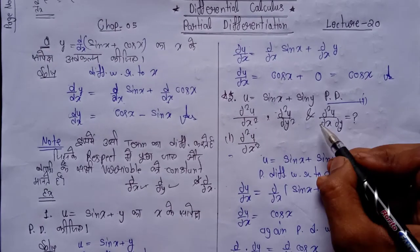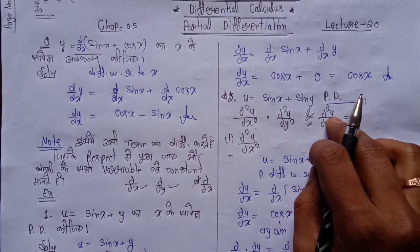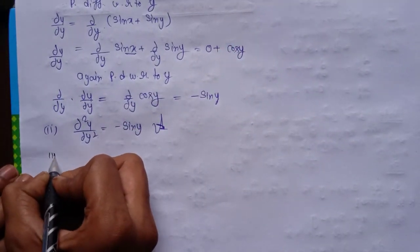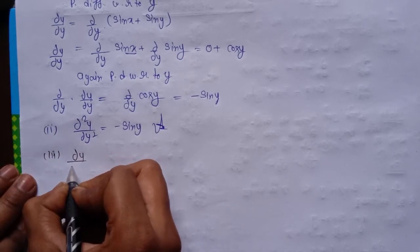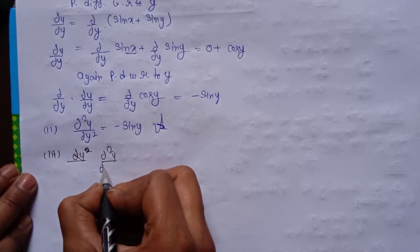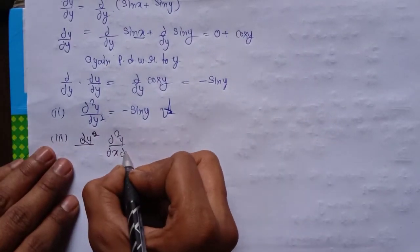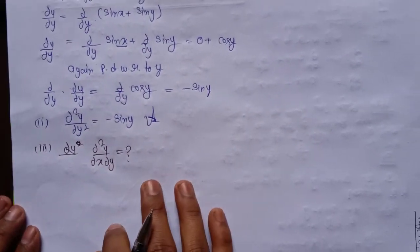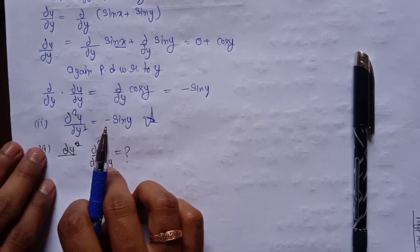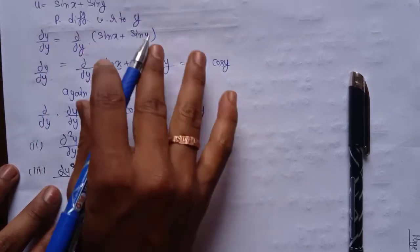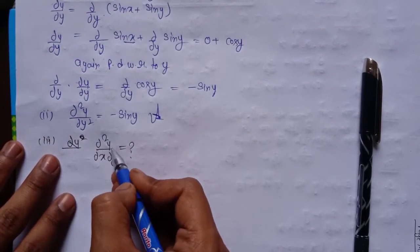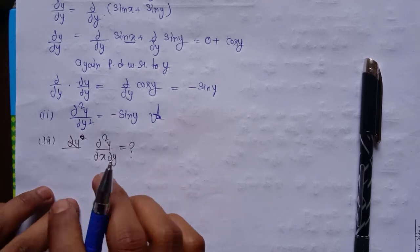Now the third part — this is very most important, guys, understand this carefully. The question can be given in different ways. It asks for ∂²u/∂x∂y. So guys, the question could be: given u = sin x + sin y, find ∂²u/∂x∂y. Here both x and y are given. Remember: we work from the back — since ∂y is at the back, we first differentiate with respect to y.